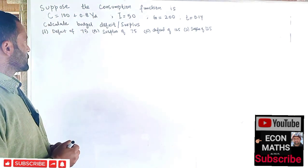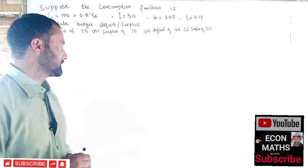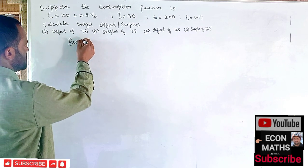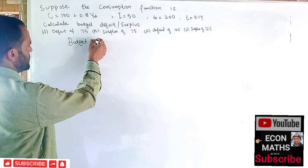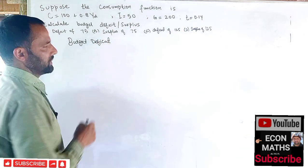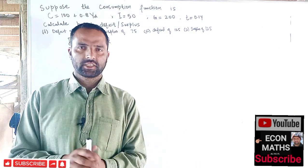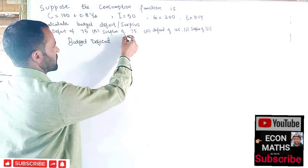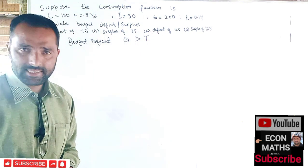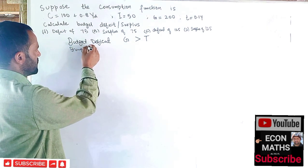First of all, we have to see what is the budget surplus or budget deficit. Budget deficit is simply when government expenditure exceeds the tax revenue, that is when government expenditure is greater than taxes. Similarly, we have a situation of budget surplus when government expenditure is less than the tax revenue.